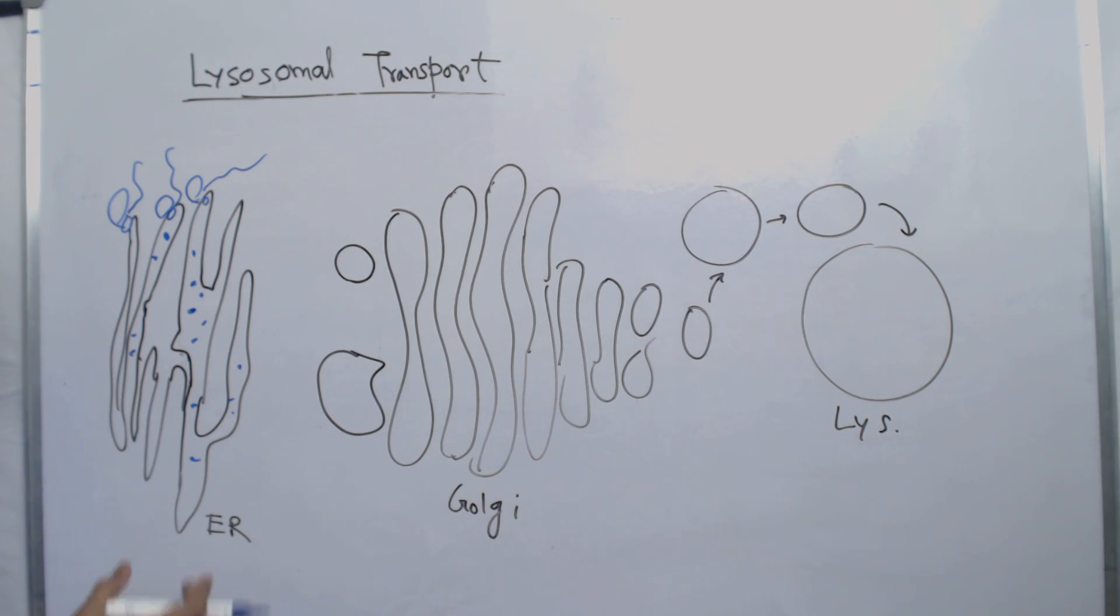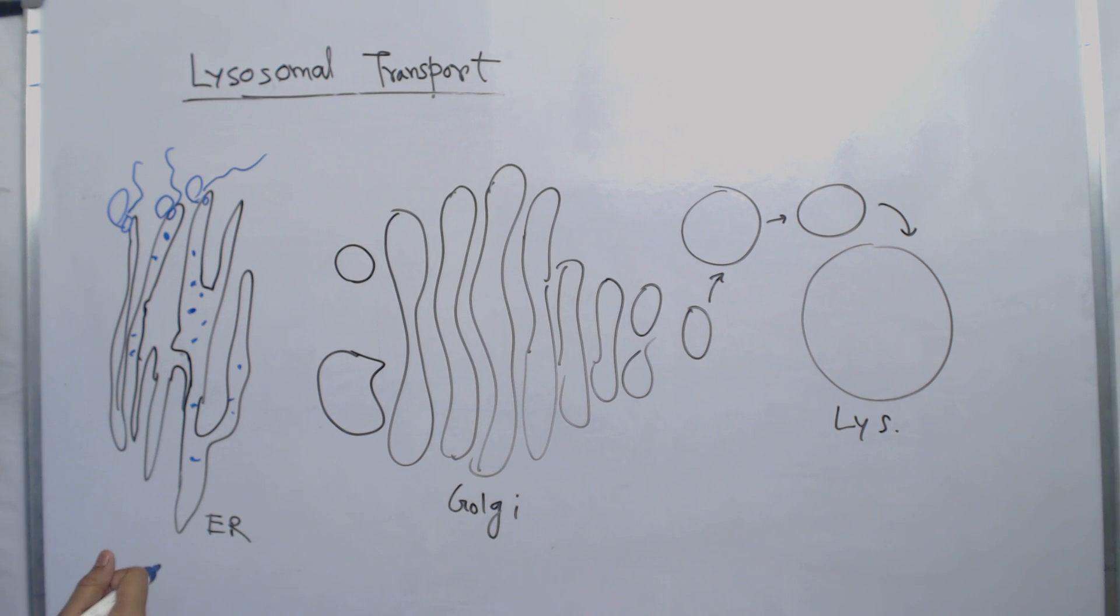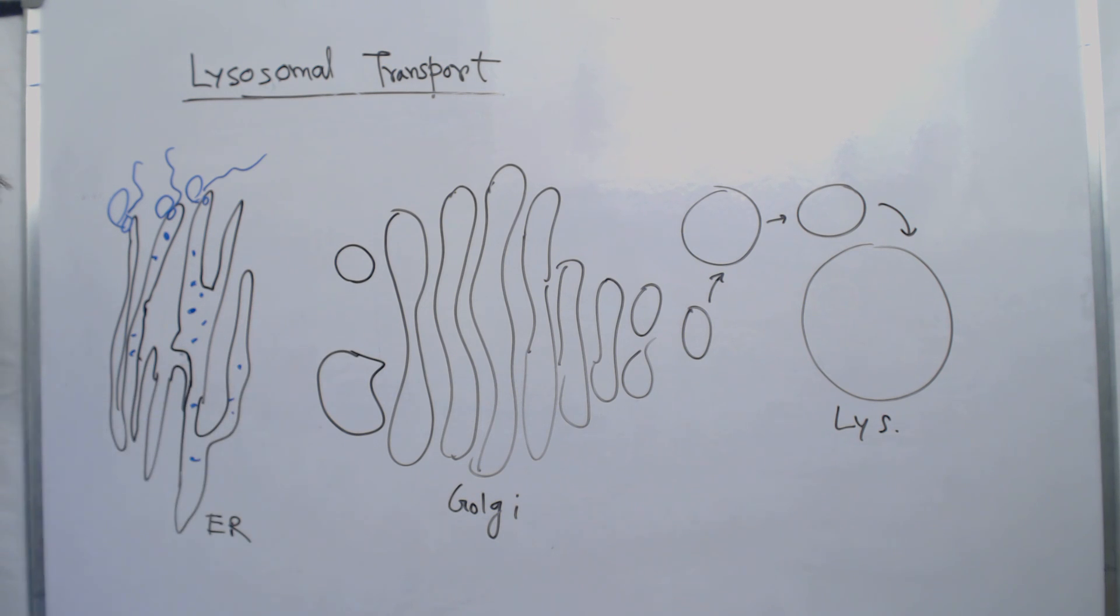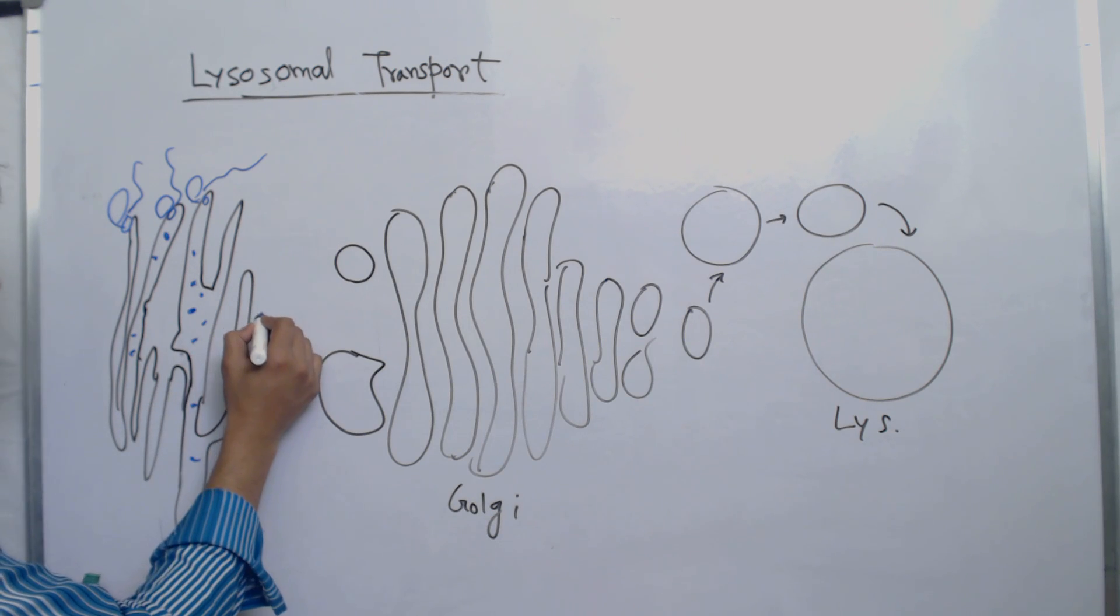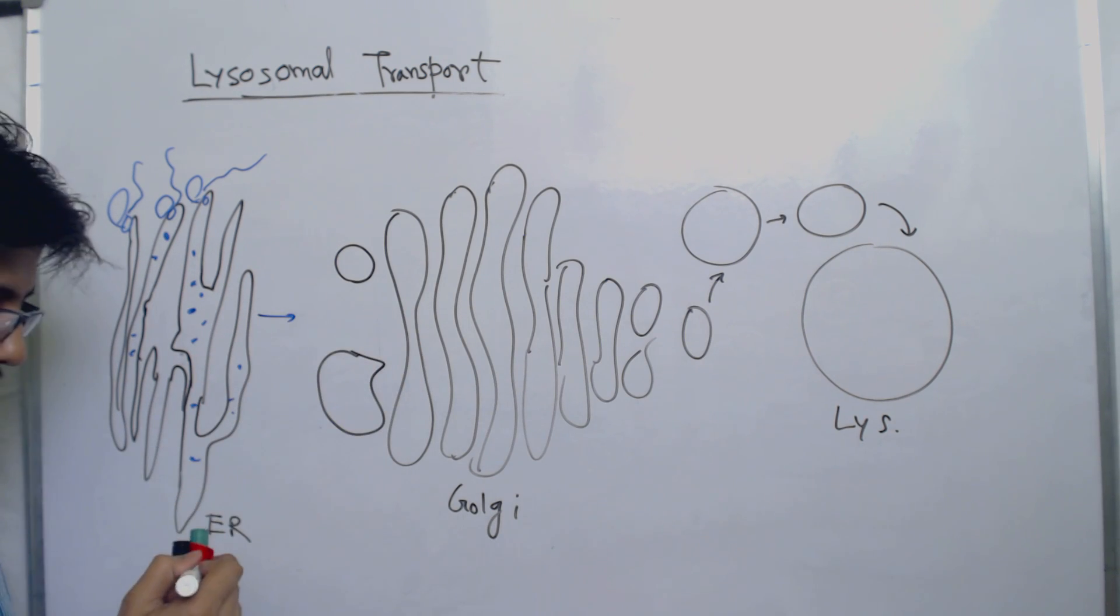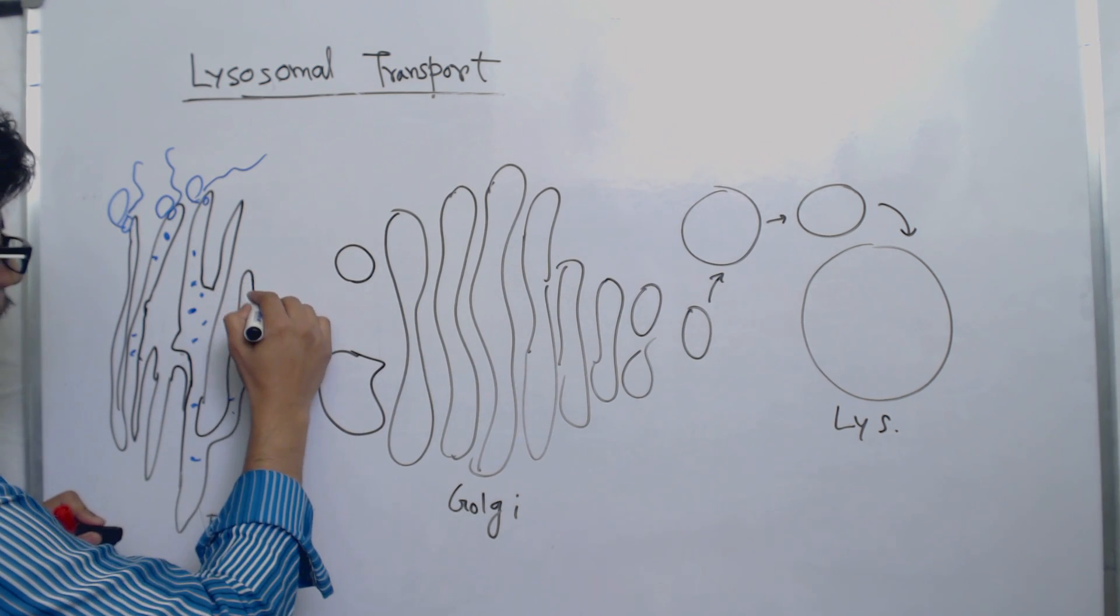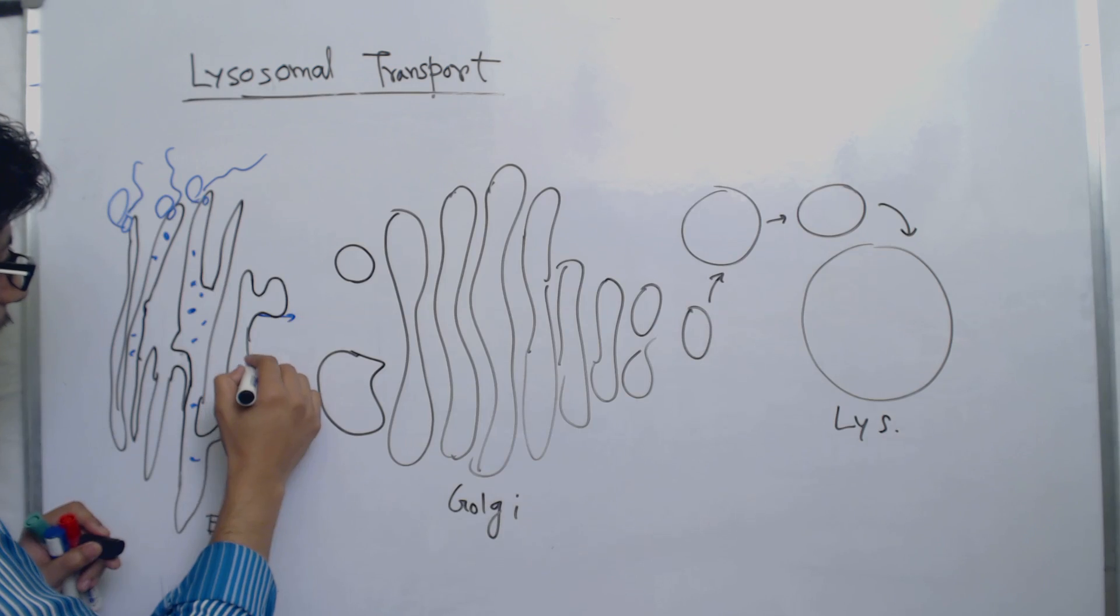The second job is to make a vesicle where the protein will be inserted. So vesicles start forming, including the target proteins, and then they will be delivered towards the Golgi apparatus. If I draw it here, the vesicles start forming the structure like that.